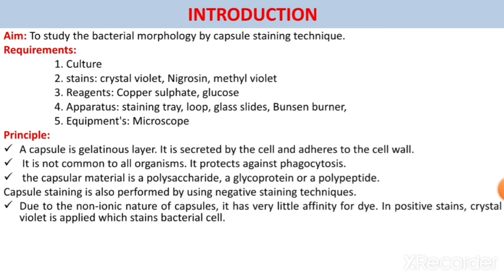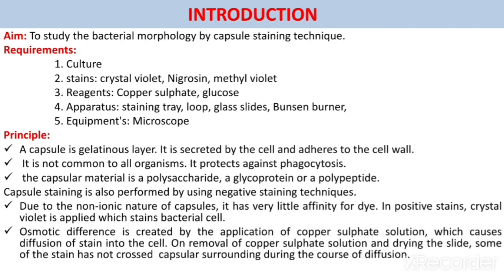Due to the non-ionic nature of the capsules, it has very little affinity for the dyes. In positive stains, crystal violet is applied which stains bacterial cell. Osmotic difference is created by the application of copper sulfate solution which causes diffusion of the stain into the cell. On removal of copper sulfate solution and drying the slide, some of the stain has not crossed the capsular surrounding during the course of diffusion. The stain is retained in the capsular layer as a light violet color against the deep violet cell.